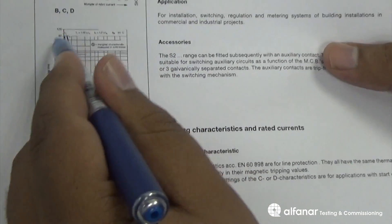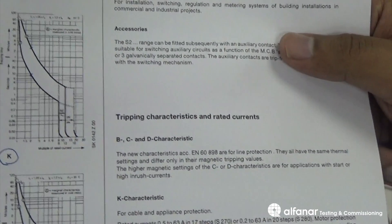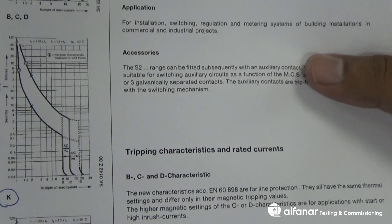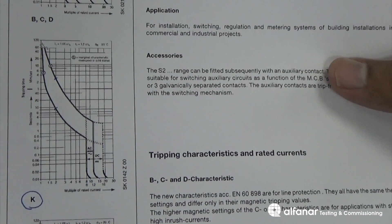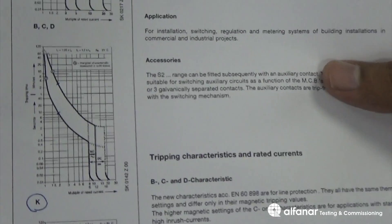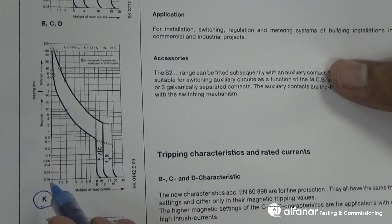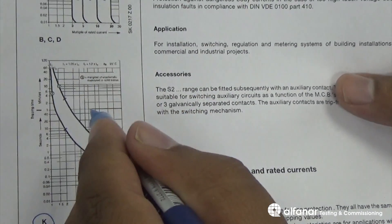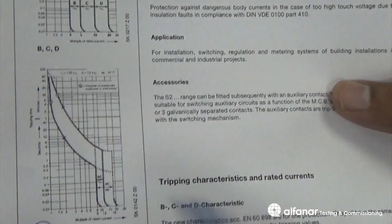This part of the curve represents the thermal mechanism, which is responsible for tripping the MCB. As the current increases, the tripping time delay will be decreased.